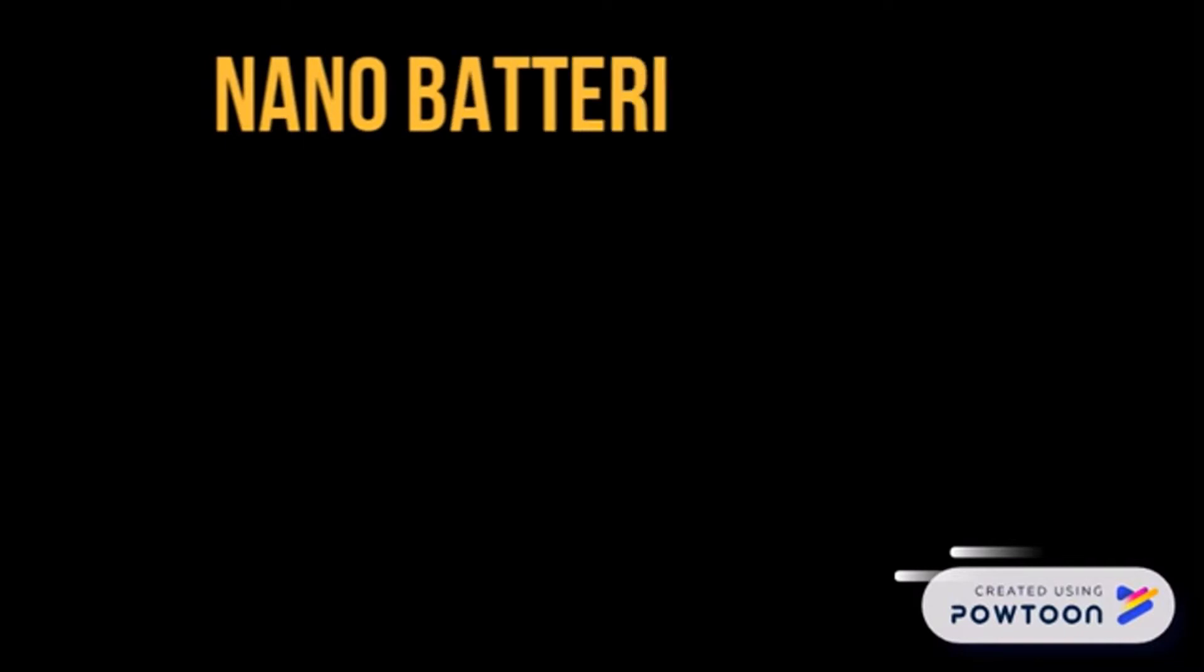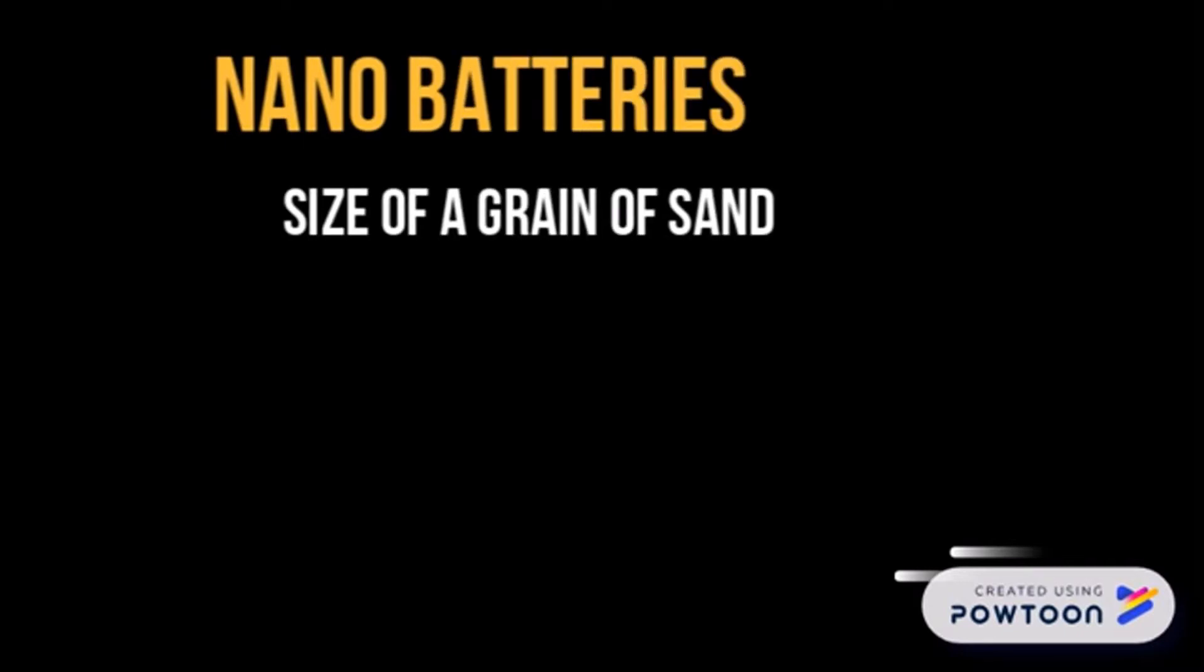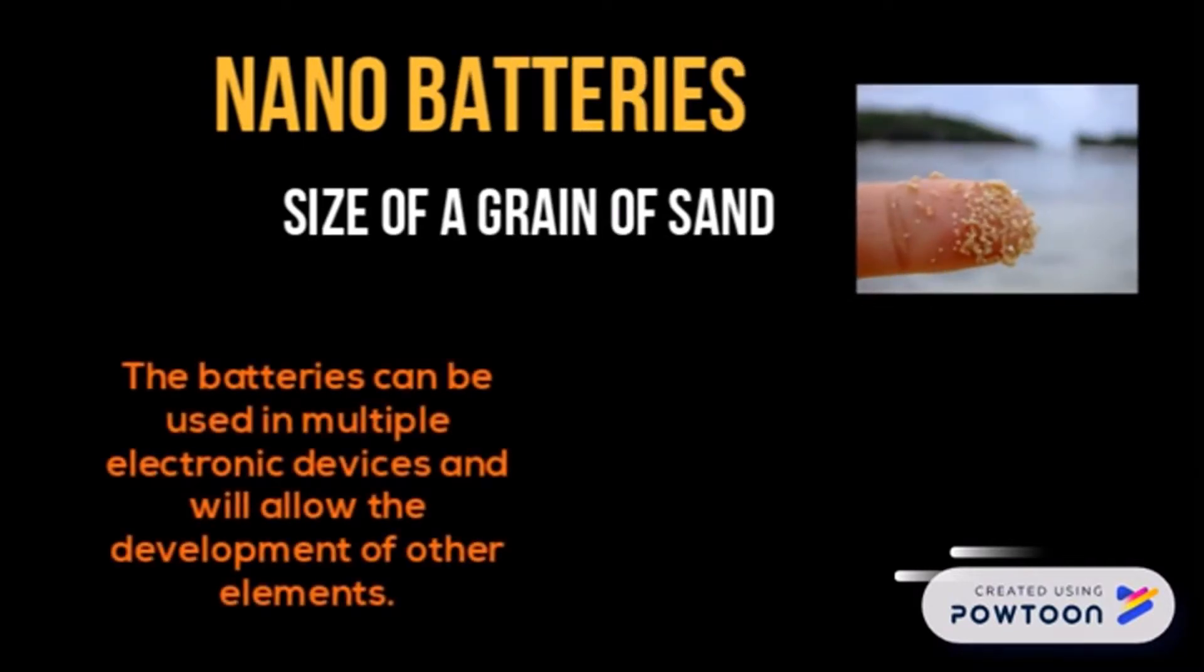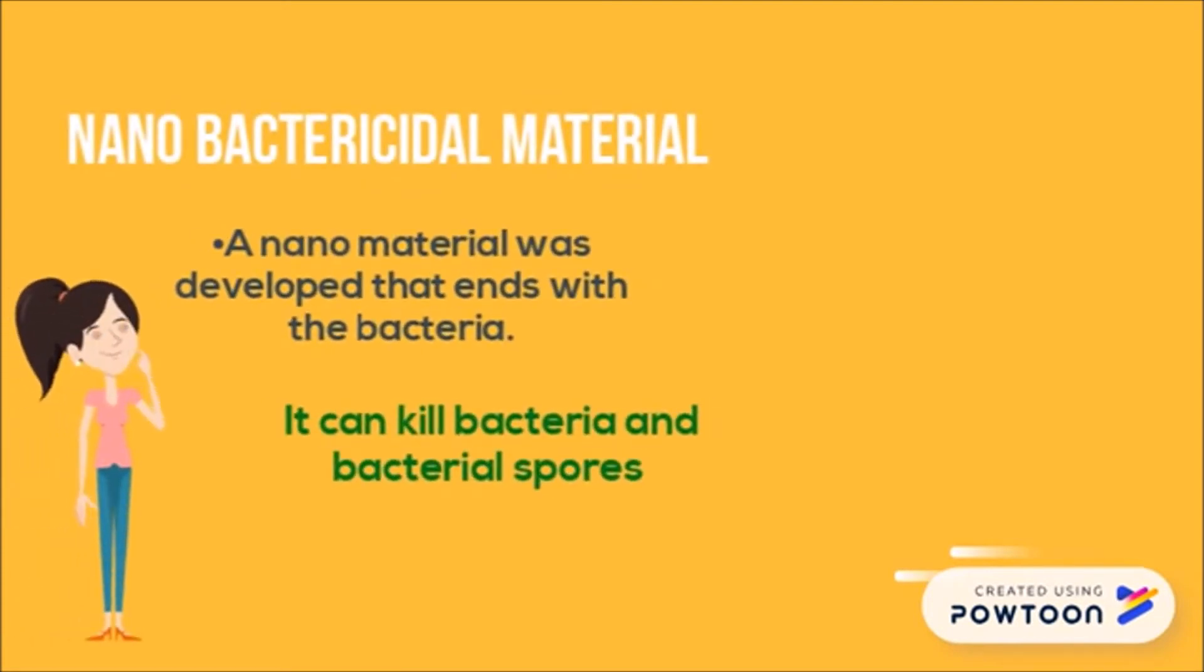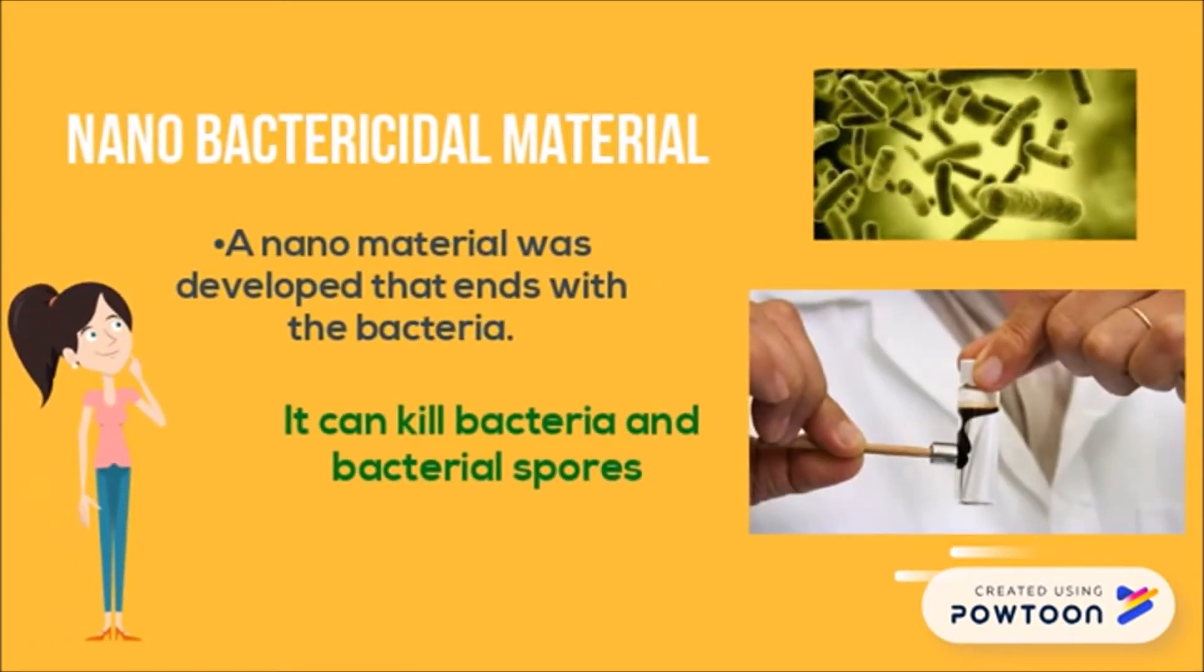Nanobacteria: they are the size of a grain of sand. Bacteria can be used in multiple electronic devices and will allow the development of other elements. A nanomaterial was developed that kills bacteria, reducing pits of sulfides with a structure of black silicon. It depends on the shape of dragonfly wings and can kill bacteria on contact.